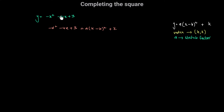So we have negative x squared minus 4x plus 3 equals a times (x minus h) squared plus k. We want to find the values of a, h, and k. Expanding the right-hand side gives ax squared minus 2ahx plus ah squared plus k. In the completed square form, a is simply the coefficient of the x squared term, so here a is equal to negative 1.